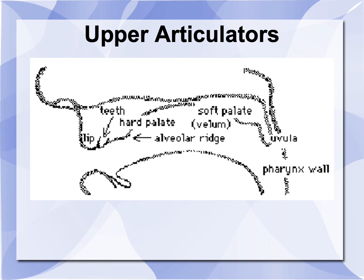Upper articulators. We will start with the upper lip. Behind this, we have the upper teeth. And just behind these, we have the alveolar ridge, which is a bony ridge like a bump right behind the teeth. Then we have the hard palate, the soft palate, the uvula, and the pharynx wall.